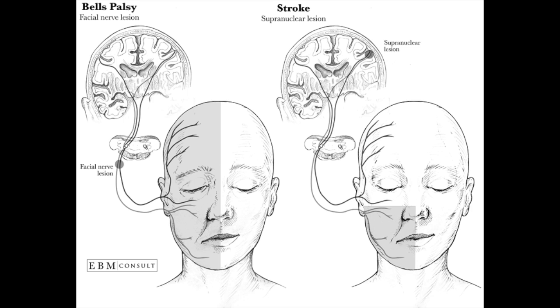Unfortunately, paralysis of one side of the face is very concerning for stroke, but there is a large difference between Bell's palsy and stroke symptoms. In Bell's palsy, patients will be unable to lift their eyebrows — there'll be an asymmetric difference in that lifting. In stroke patients, they should still be able to lift both eyebrows fine, but their smile will be asymmetric. As you can see in this picture, Bell's palsy involves the forehead, whereas stroke spares the forehead.